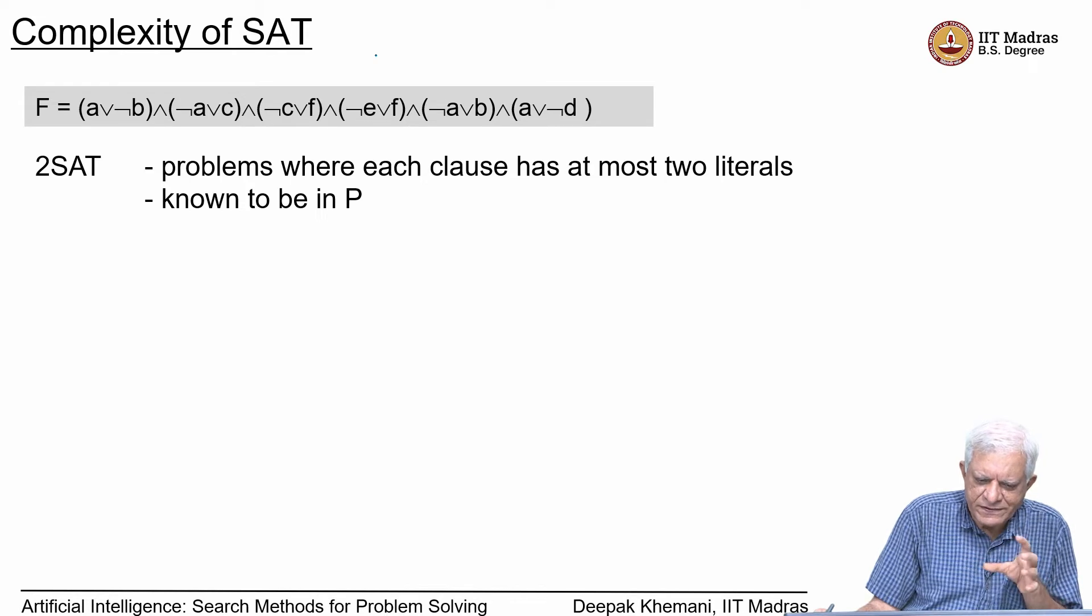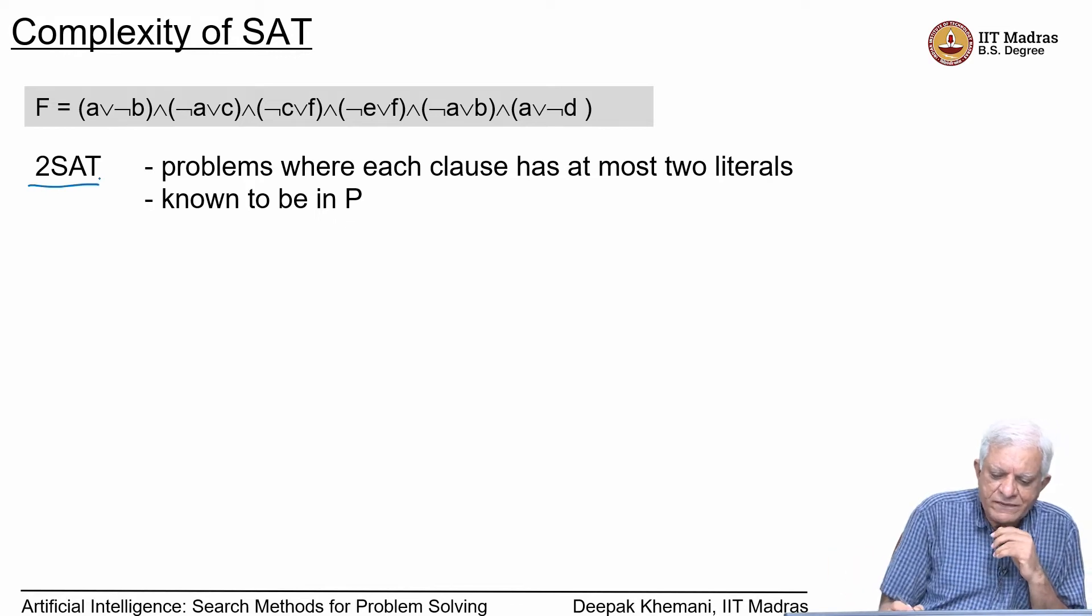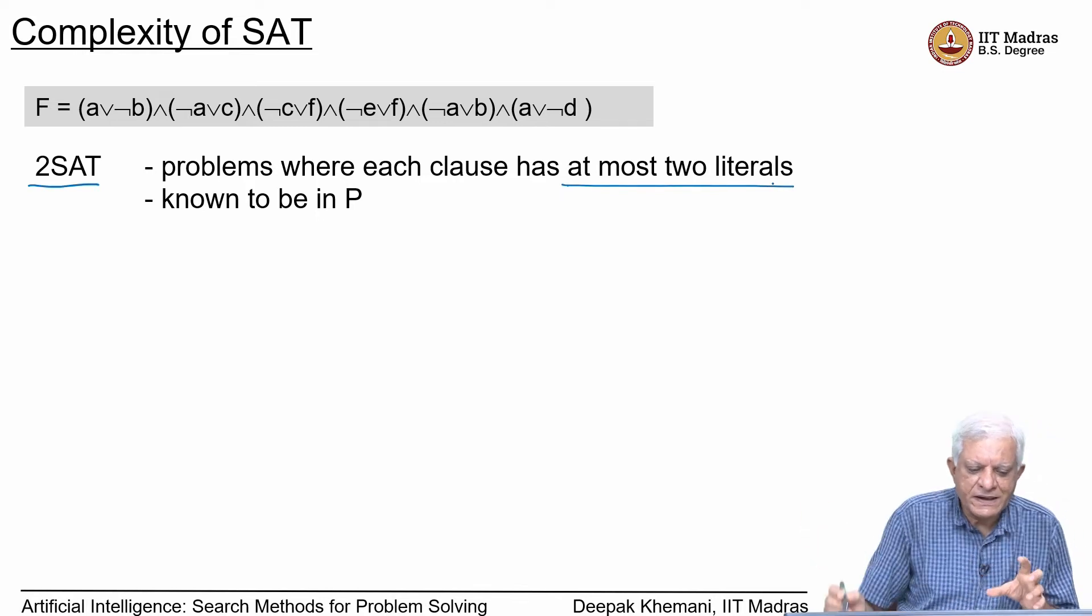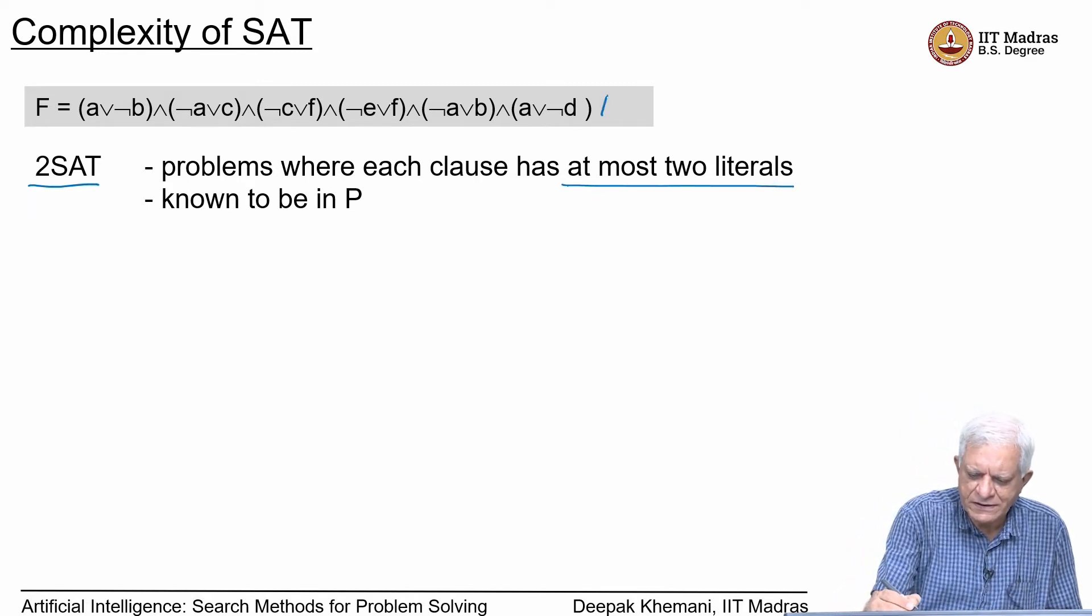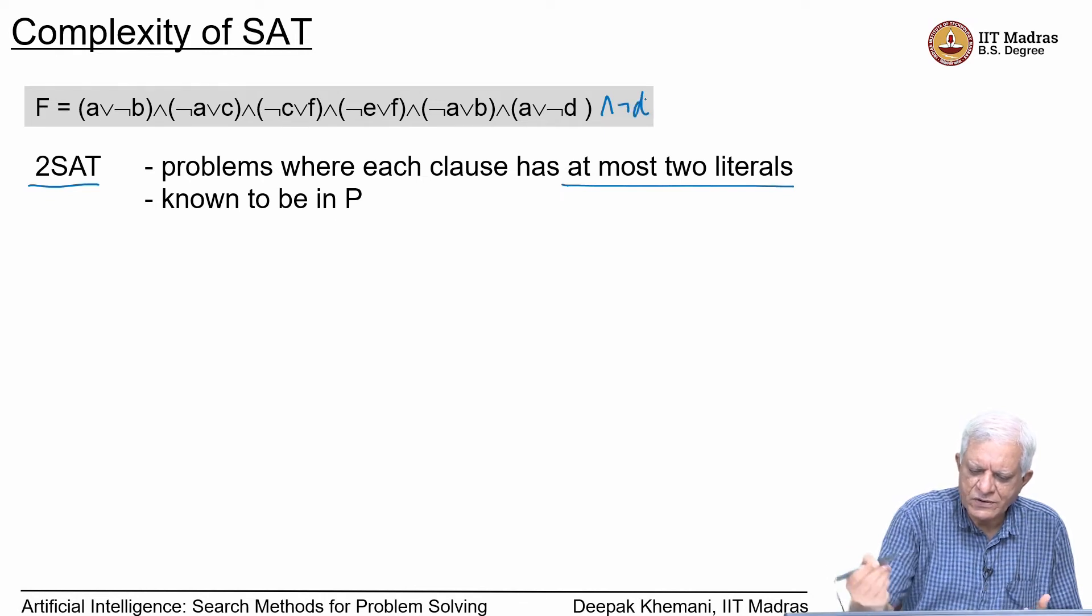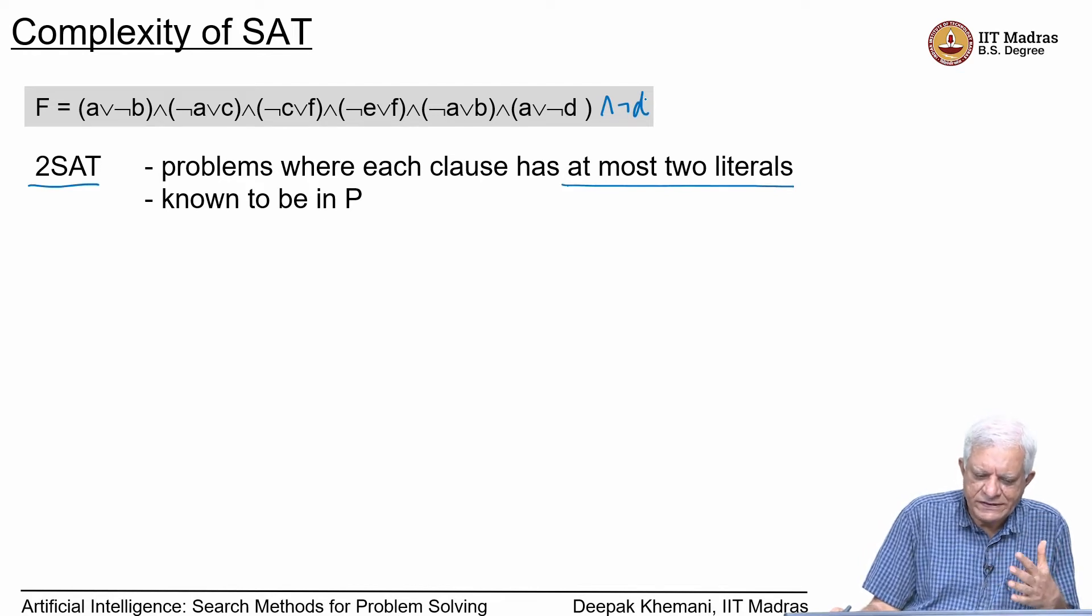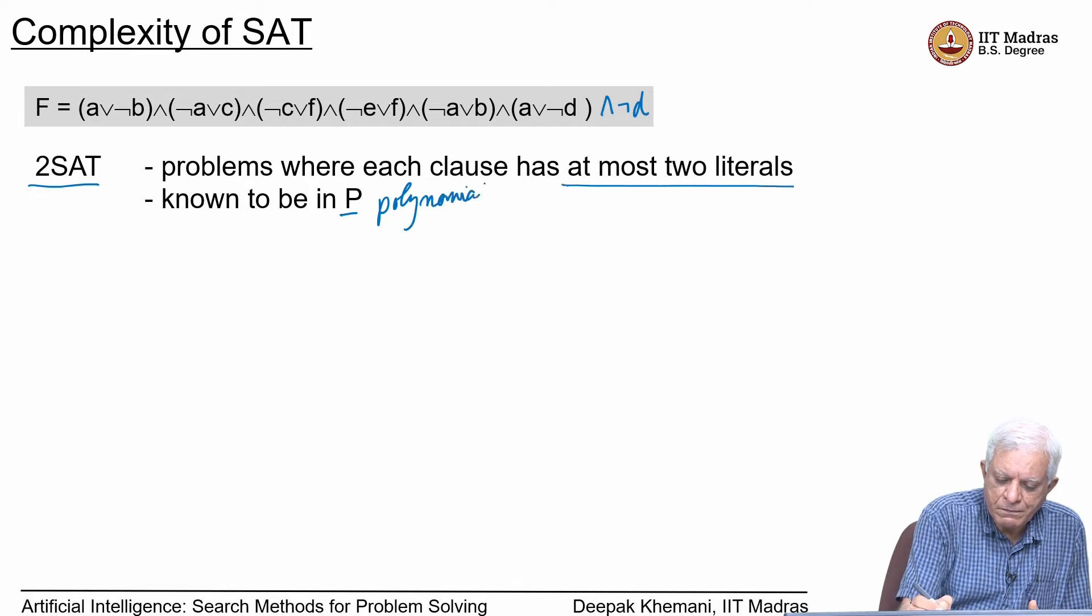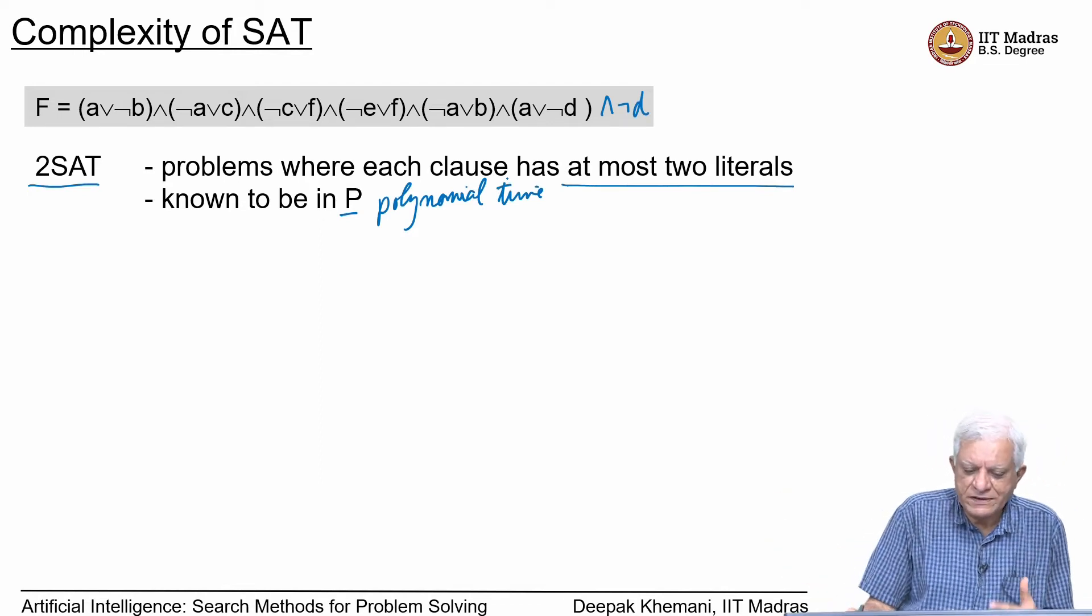This is a subclass of SAT which is called 2SAT. By 2SAT, we mean that each clause has at most two literals. You can see that within the brackets, every clause has exactly two literals in this example, but it could have one also - for example, I could have had another clause which said NOT D, and that also would be a 2SAT formula. It has been shown that solving 2SAT is easy and can be solved in P. When we talk about complexity, we mean polynomial time. As computer scientists, we are in general happy with problems which can be solved in polynomial time. 2SAT can be solved in polynomial time.